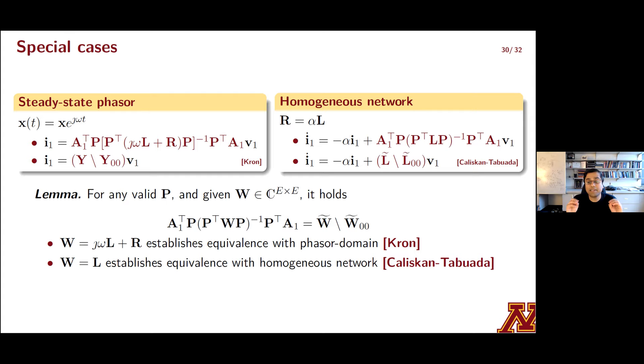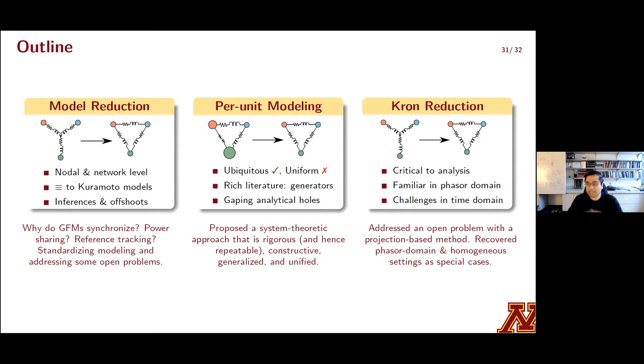You can show that for all valid P matrices and arbitrary non-zero edge weights that you might collect in this diagonal matrix capital W, we have a lemma here that establishes a correspondence of the seemingly complex product of matrices A1, P, and W with a Schur complement. And then if you instantiate W suitably, you will actually get the desired equality for the two special cases, one in the phasor domain and one in the time domain for the homogenous network, hence aligning what we have with what's been proposed in the past.